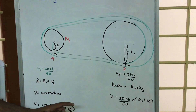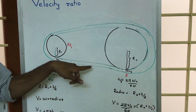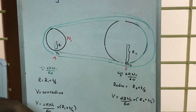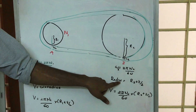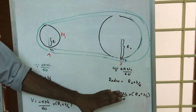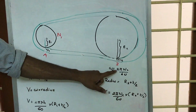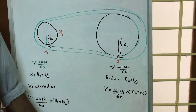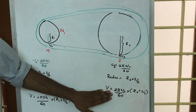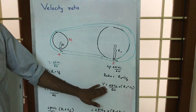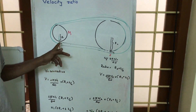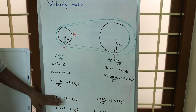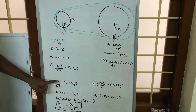We take t/2 because points A and B are considered at the center of the belt thickness. So omega2 multiplied by the distance r2 + t/2 gives the velocity at point B. Since the belt is inelastic, velocity at A equals velocity at B, so VA = VB, and we equate those two velocities.